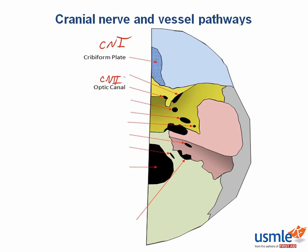Lateral to that we have the superior orbital fissure, where cranial nerves three, four, V1, and six pass through. In addition, the ophthalmic vein and sympathetic fibers also travel through here. It makes sense that this is the orbital fissure — orbital meaning the orbit, where the eye is — and all of these nerves are important for different functions of the eye, mostly motor movement, so it makes sense they travel together out of this foramen.